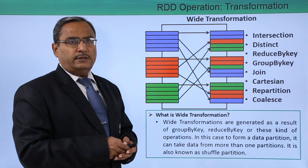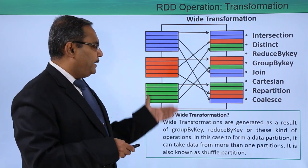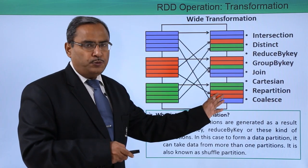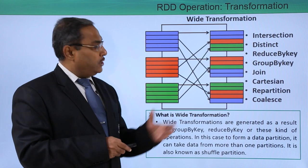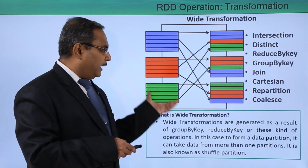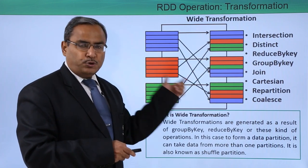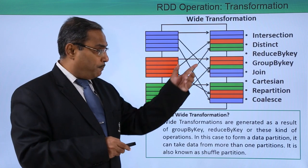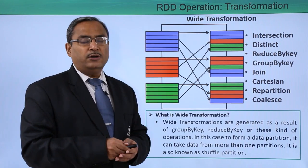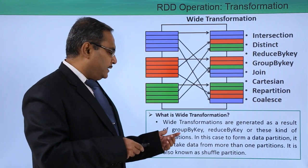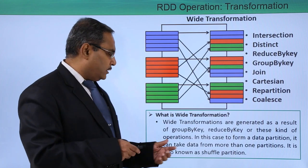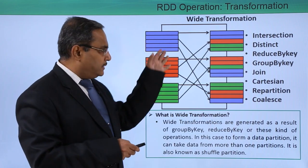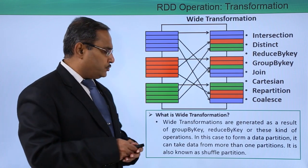For wide transformation, multiple partitions take participation in the operation to produce the output partitions, which is why it is also known as a shuffle operation. The outcome partitions contain respective portions from multiple different input partitions. The operations may be intersection, distinct, reduce by key, group by key, join, partition, repartition, and coalesce. Wide transformations are generated as a result of group by key, reduce by key, or similar operations. To form a data partition, it can take data from more than one partition, and it is also known as shuffle partition.